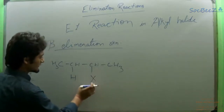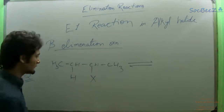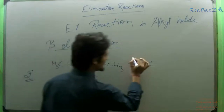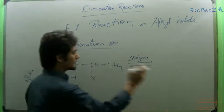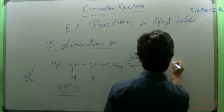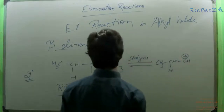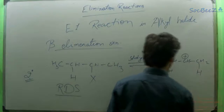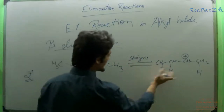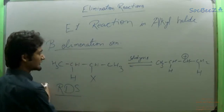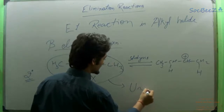In the first step, known as solvolysis, which is the rate determining step, the X group is eliminated forming a carbocation — for example, CH₃CH(+)CH₂H. This carbocation molecule takes part in the second step. Since only a single molecule is involved in the rate determining step, it is a unimolecular reaction.